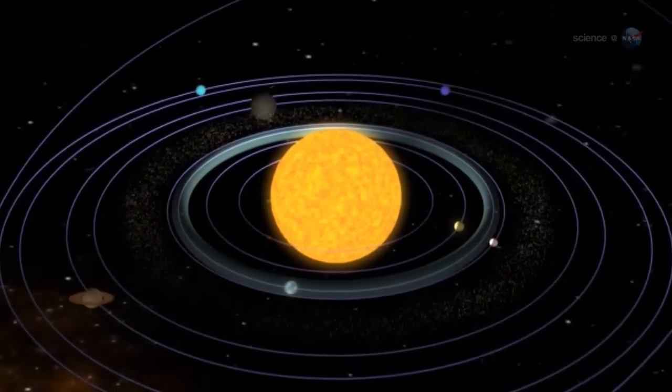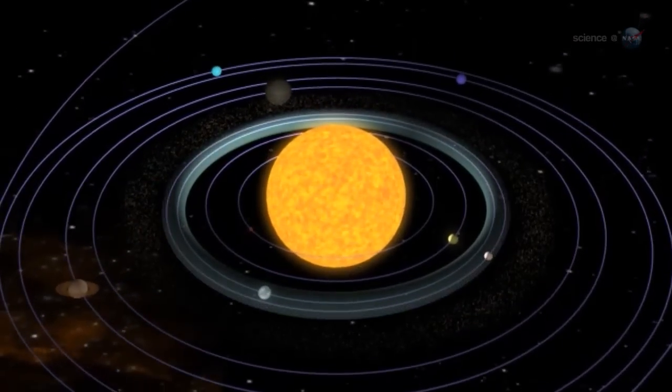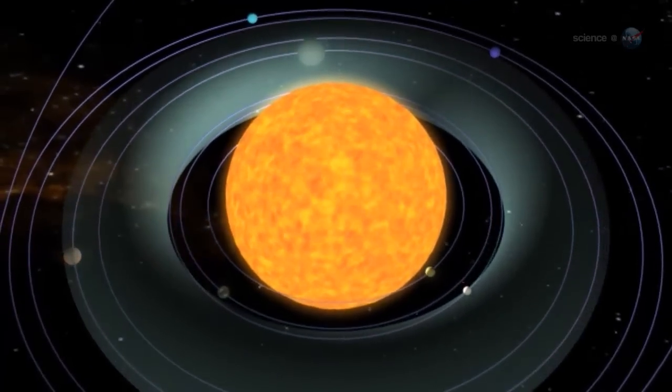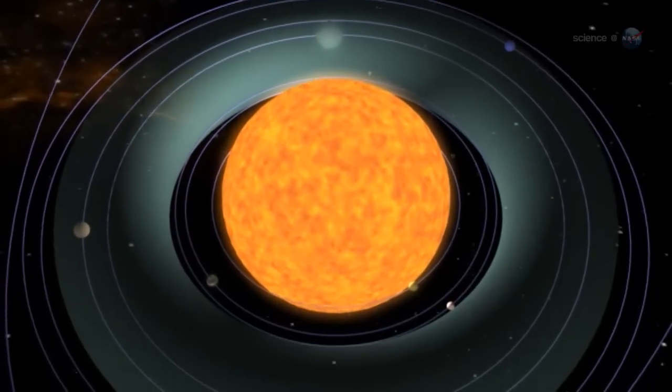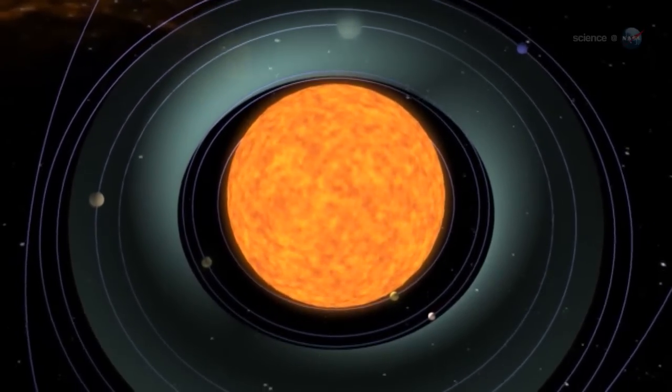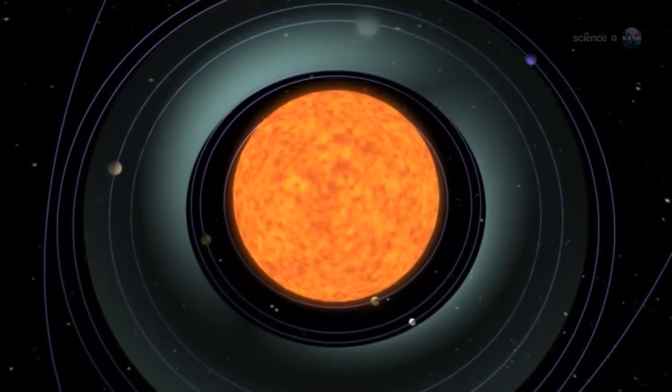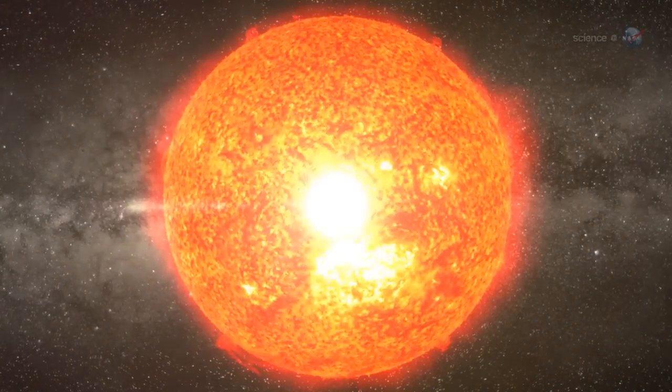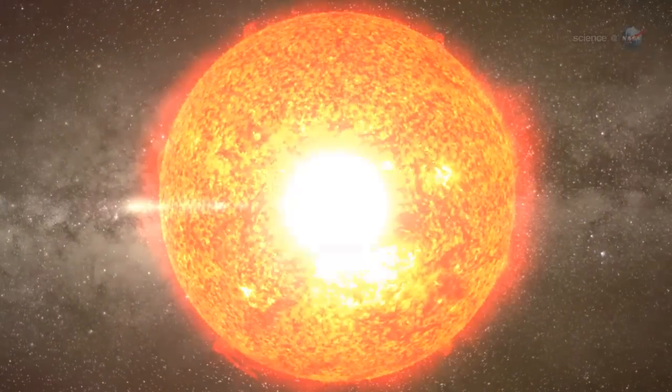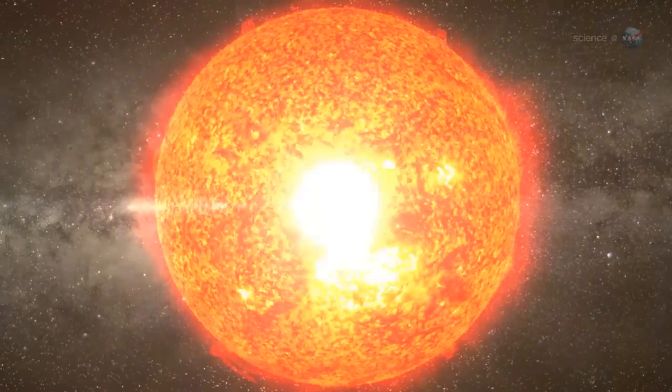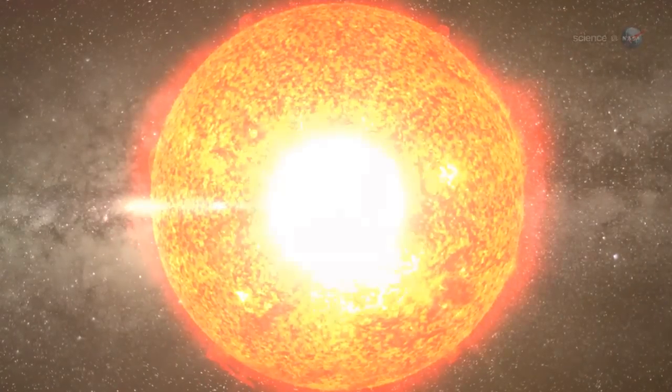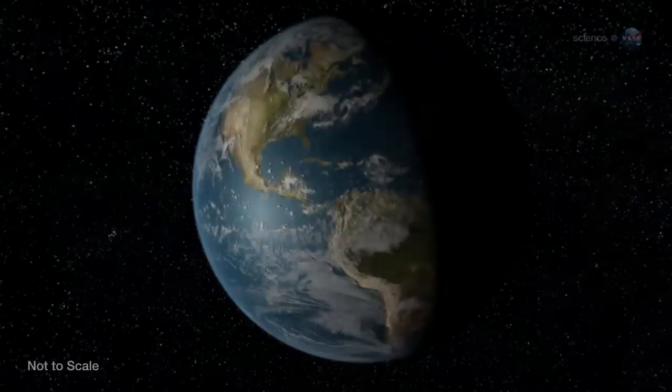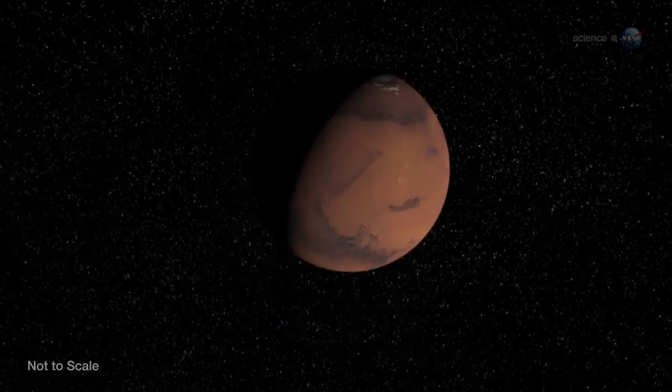Researchers who specialize in stellar evolution have long known that the inner planets are in danger. The trouble starts in the distant future when the Sun's core runs out of hydrogen fuel for nuclear fusion. To keep the fires burning, the Sun will begin to fuse hydrogen outside the core in a layer closer to the stellar surface. This will turn the Sun into a red giant at least 200 times wider than it is today. Mercury, Venus, Earth, and possibly even Mars could be engulfed.